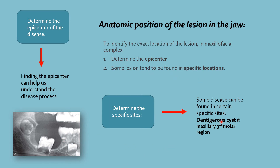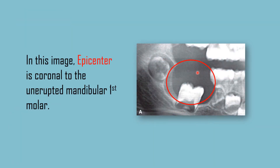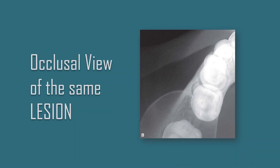Let's discuss this image. It shows an unerupted mandibular first molar, and the lesion is present coronal to it — so the epicenter is coronal to the unerupted mandibular first molar. When you see the second image, it is the occlusal view of the same lesion, where the epicenter is present occlusal to, or coronal to, the tooth.